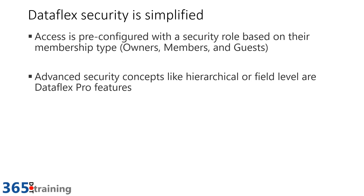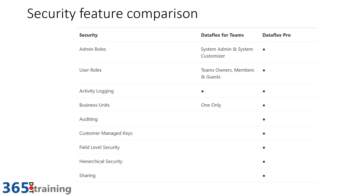One core concept of Dataflex is making it approachable for new application builders, so Microsoft has simplified the available security options to avoid complicated choices. Record-level security is still available, but more advanced features like field-level security are Dataflex Pro features. User roles are focused around owners, members, and guests — not a full flexibility of custom roles. Core activity logging is included, but deep auditing, managed customer keys, hierarchical security, and sharing are all Dataflex Pro features.